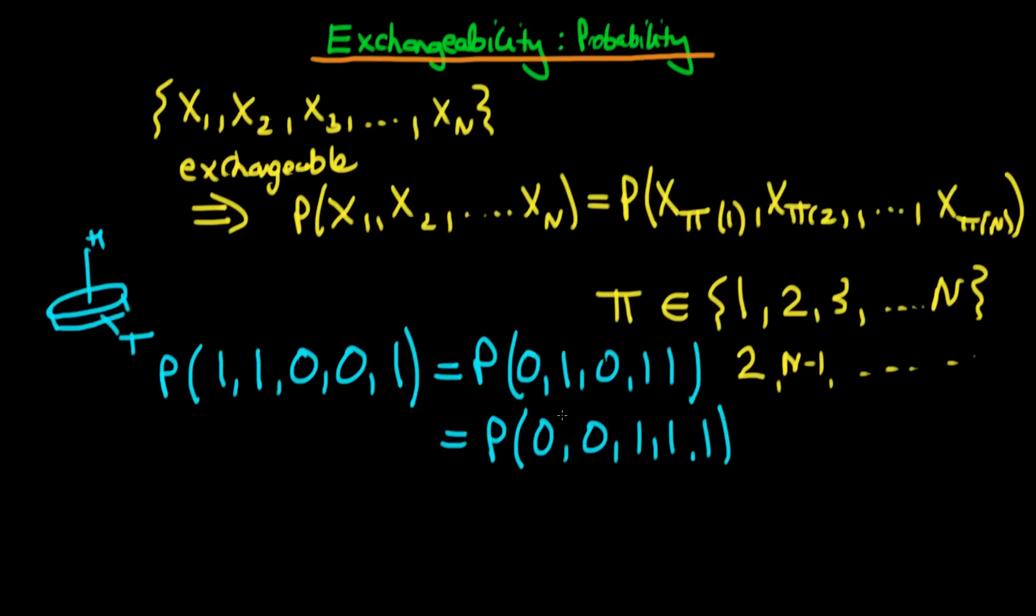And in this particular case, there are 60 equivalent sequences because they all have the same joint probability. So in this circumstance, we would say that the random quantities, the result of throws of this particular coin, are themselves exchangeable random quantities. So that's an example of the case when they are exchangeable.